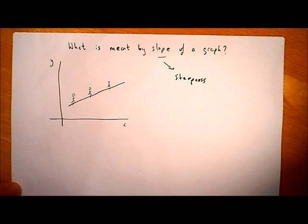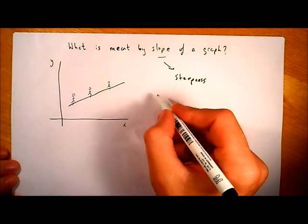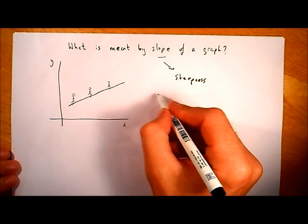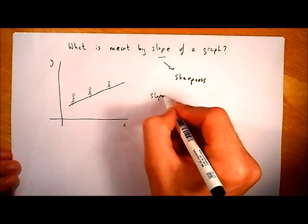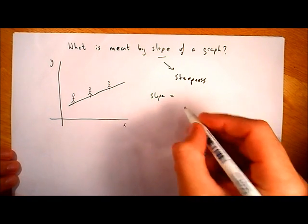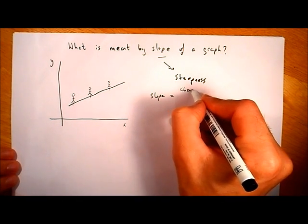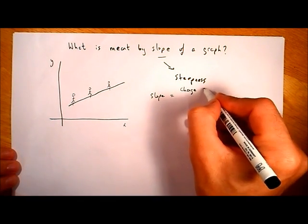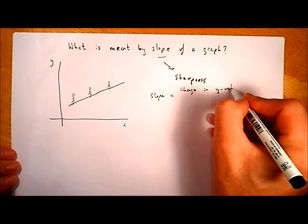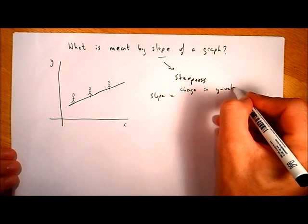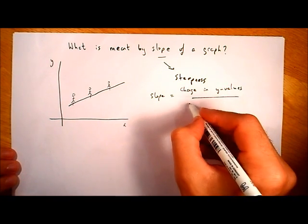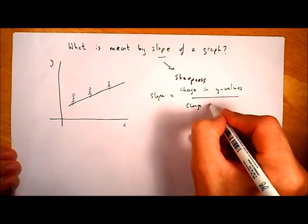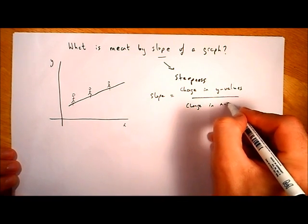What we want to be able to do is put a number on the steepness of a graph — on the steepness of a line or of a curve. The way we calculate the steepness or the slope is we work out the change in the y values and divide it by the change in the x values.